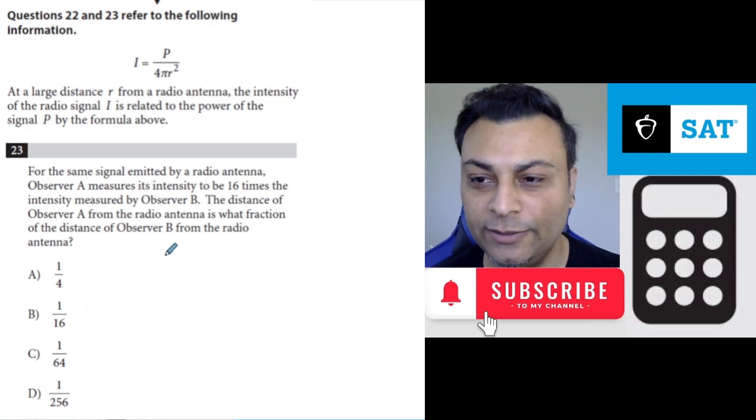Same information for question 23. For the same signal emitted by a radio antenna, Observer A measures its intensity to be 16 times the intensity measured by Observer B. The distance of Observer A from the radio antenna is what fraction of the distance of Observer B from the radio antenna?